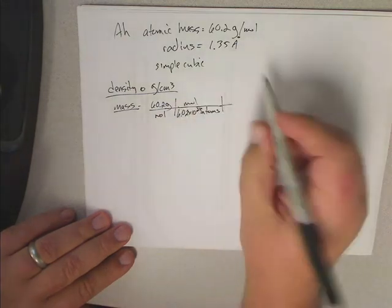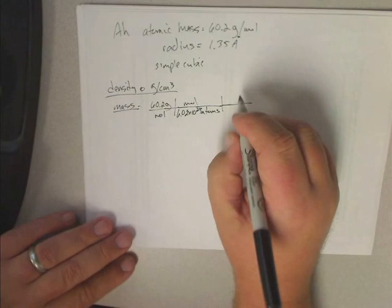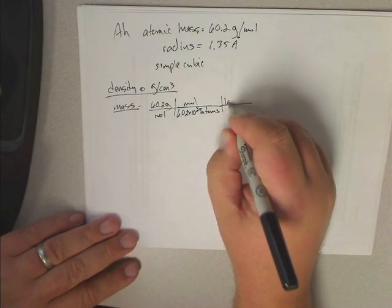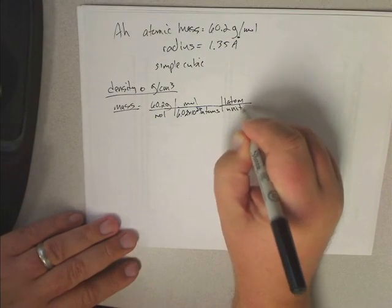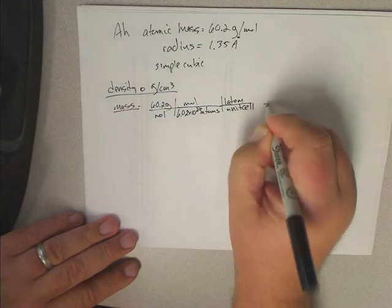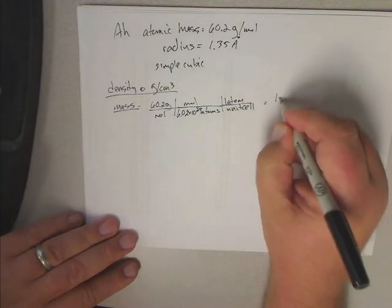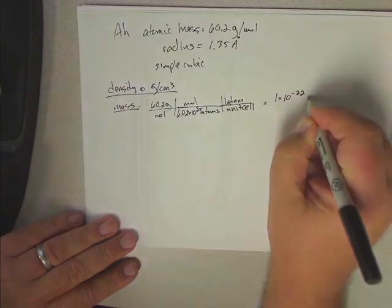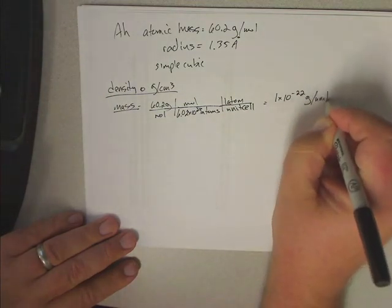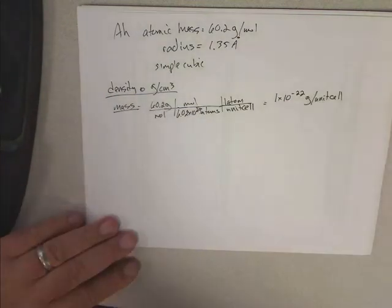And then in the case of simple cubic, from our chart, we know that there is one atom per unit cell. So if you do that, you get 1 times 10 to the minus 22nd grams per unit cell. That takes care of the top part.